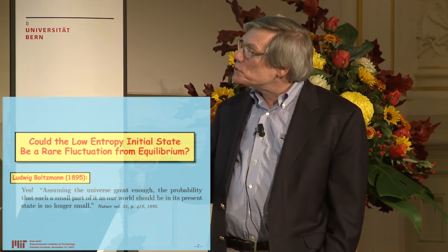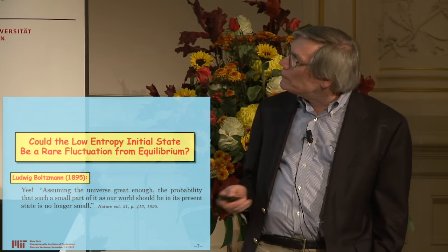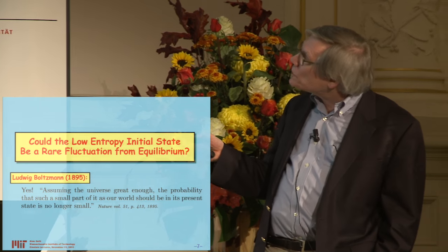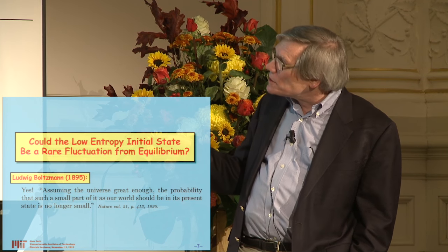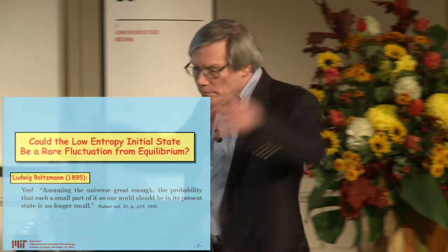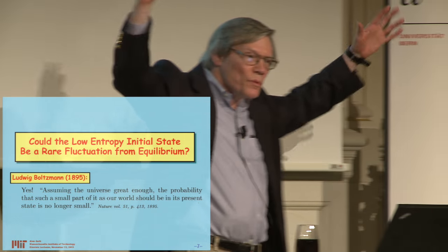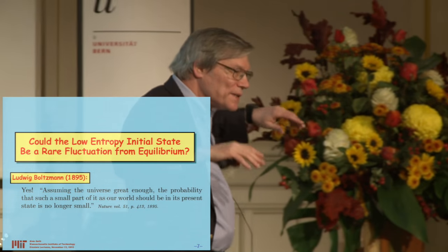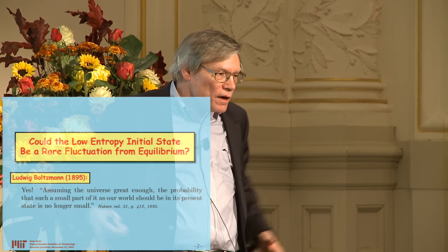He gave an answer which now we think is wrong, but he said yes. In an article he wrote in Nature in 1895, he made the statement that assuming the universe great enough, the probability that such a small part of it as our world should be in its present state is no longer small. He concluded it could just be a fluctuation.